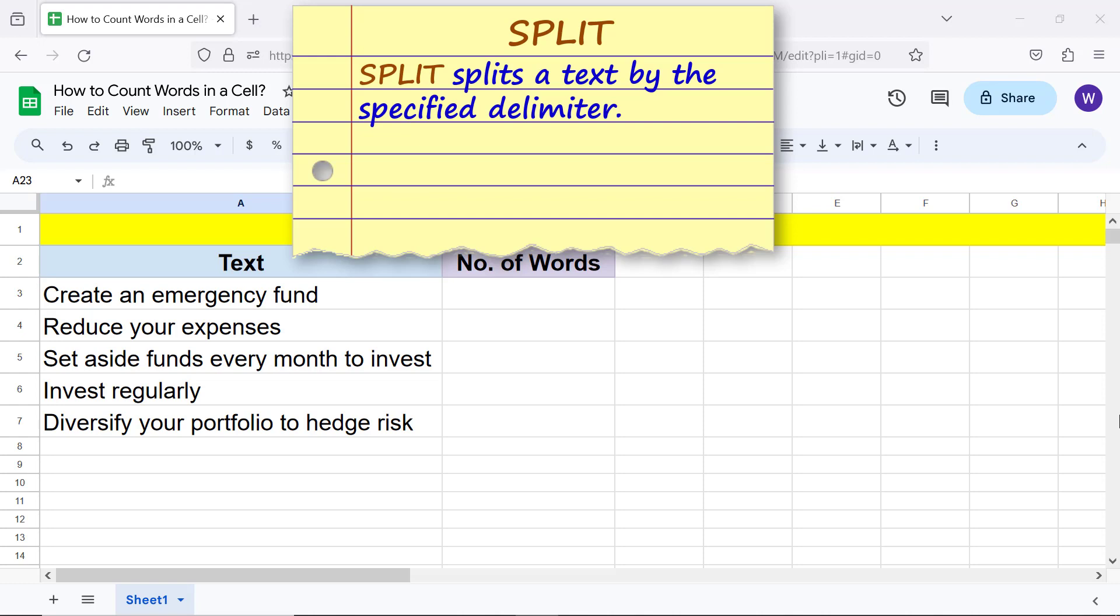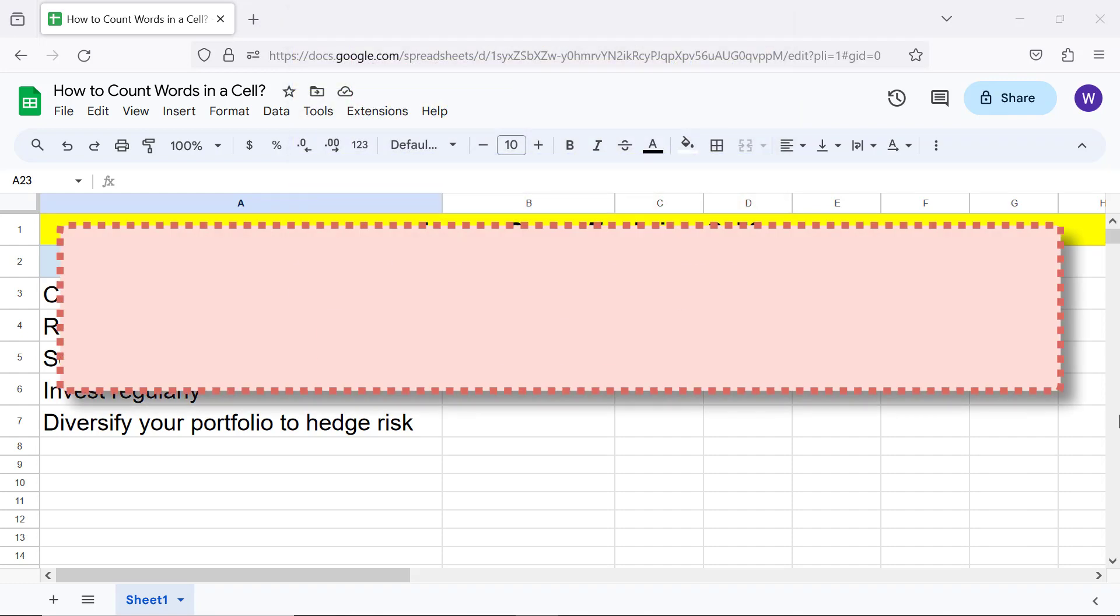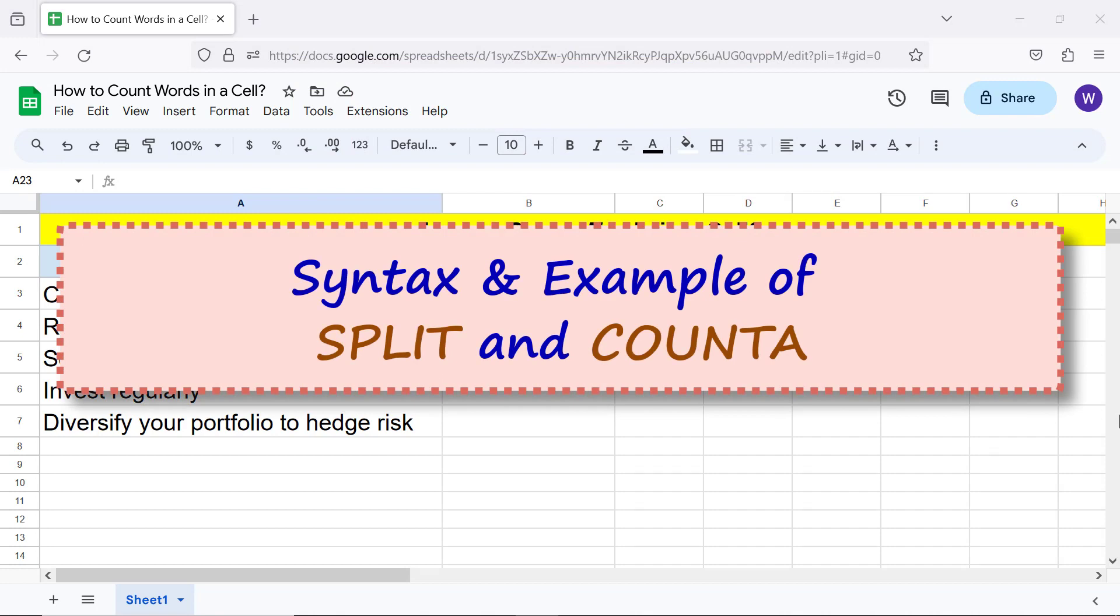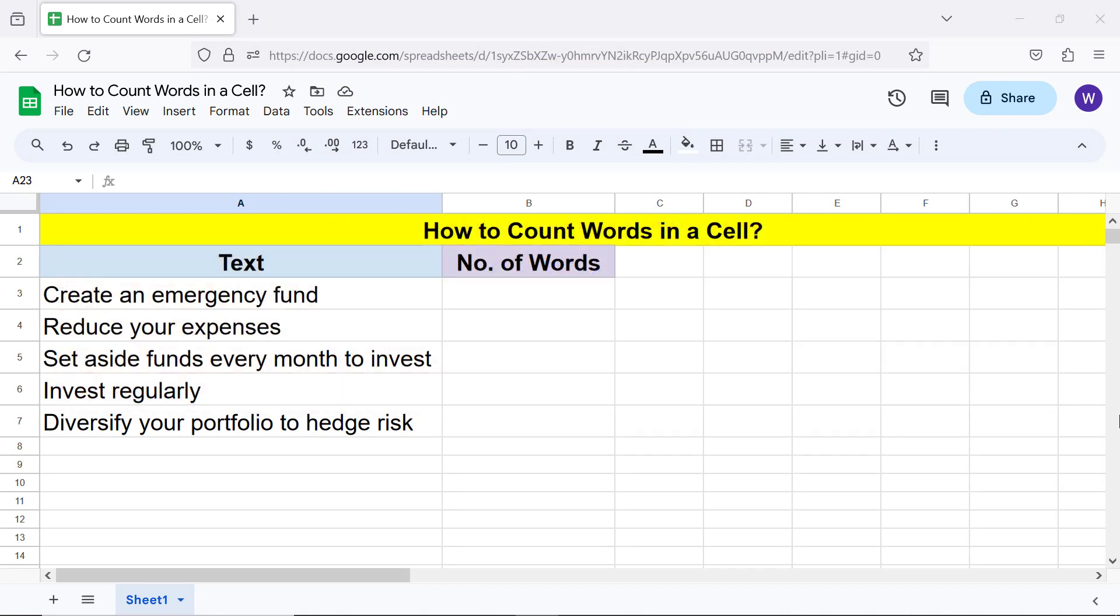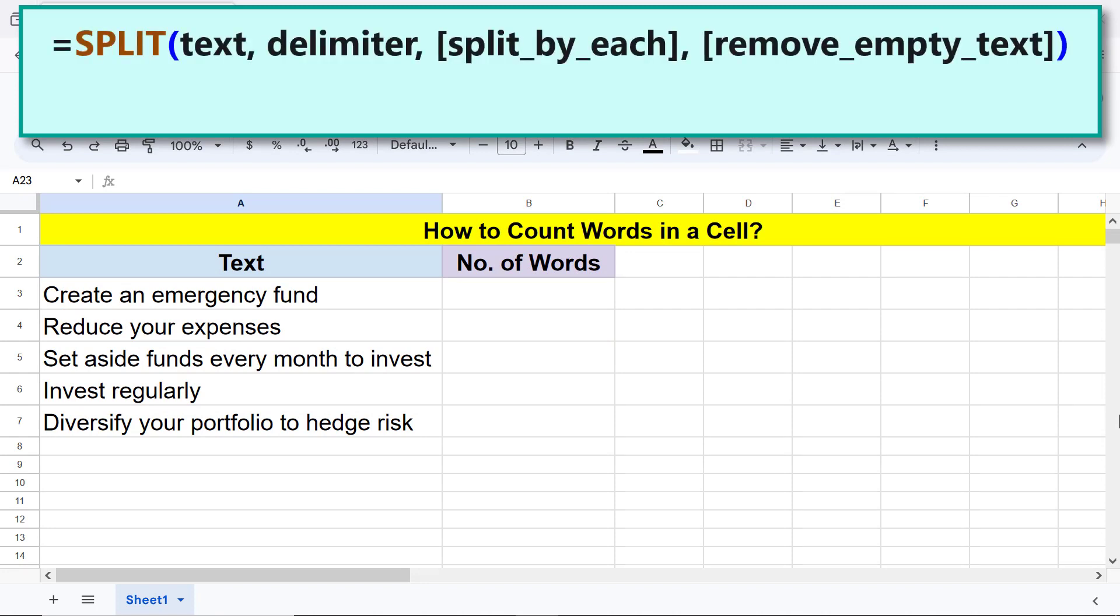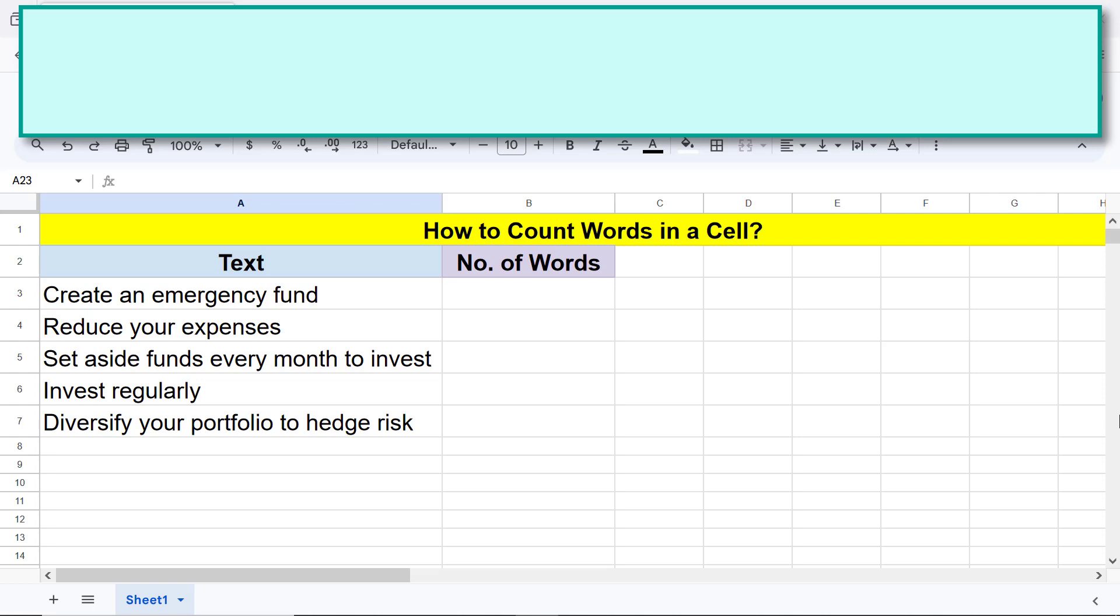Syntax and example of SPLIT and COUNTA. Here is the syntax of SPLIT. Let's look at an example. Text is the string we want to split. Delimiter is the character, for example a space or comma, by which to split the text. Now let's take a look at the syntax of COUNTA.